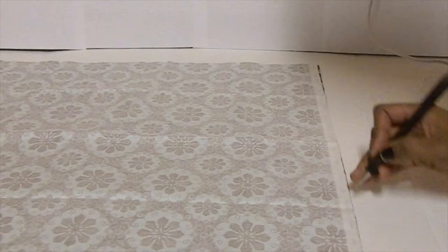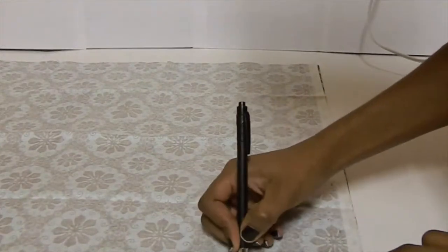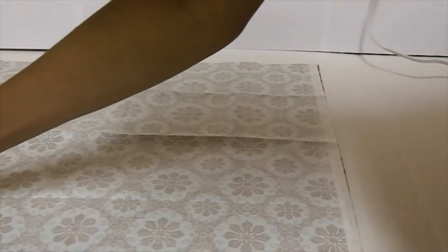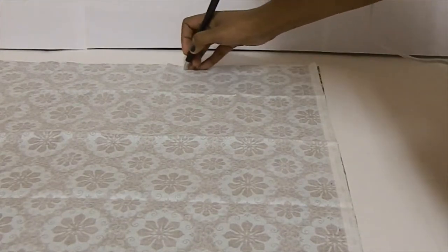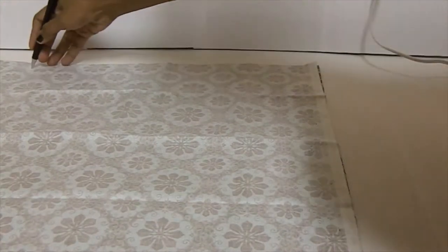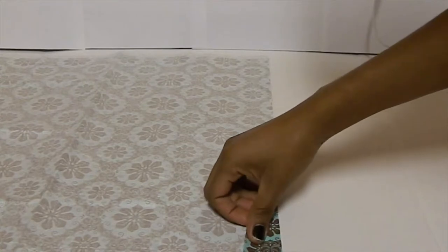Once you've done that, the next step is to turn the fabric inside out and make marks along the three sides of the fabric with a pen. You do that by making the marks a few inches from the edge of the fabric like so.